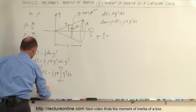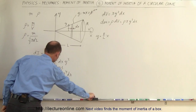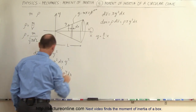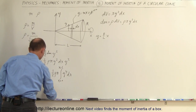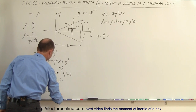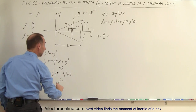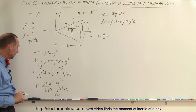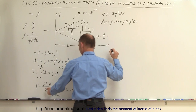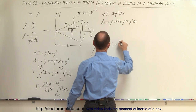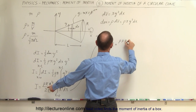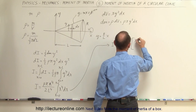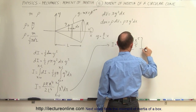We can write I equal to density times pi times R to the fourth, divided by 2 L to the fourth, times the integral from x equals zero to x equals L of x to the fourth dx. The integral is straightforward: integrating x to the fourth gives x to the fifth divided by five, with limits from zero to L.